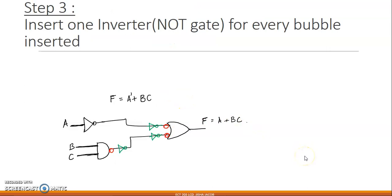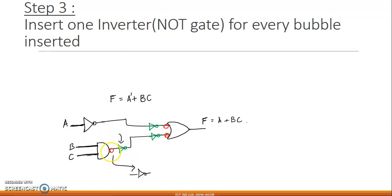The next step involves inserting an inverter for every bubble you have inserted. For every bubble inserted, you have actually introduced a negation — meaning a NOT gate. In order to balance that, you have to insert an extra NOT gate in the circuit. So wherever you have inserted a bubble, you introduce an extra NOT gate on the same wire.